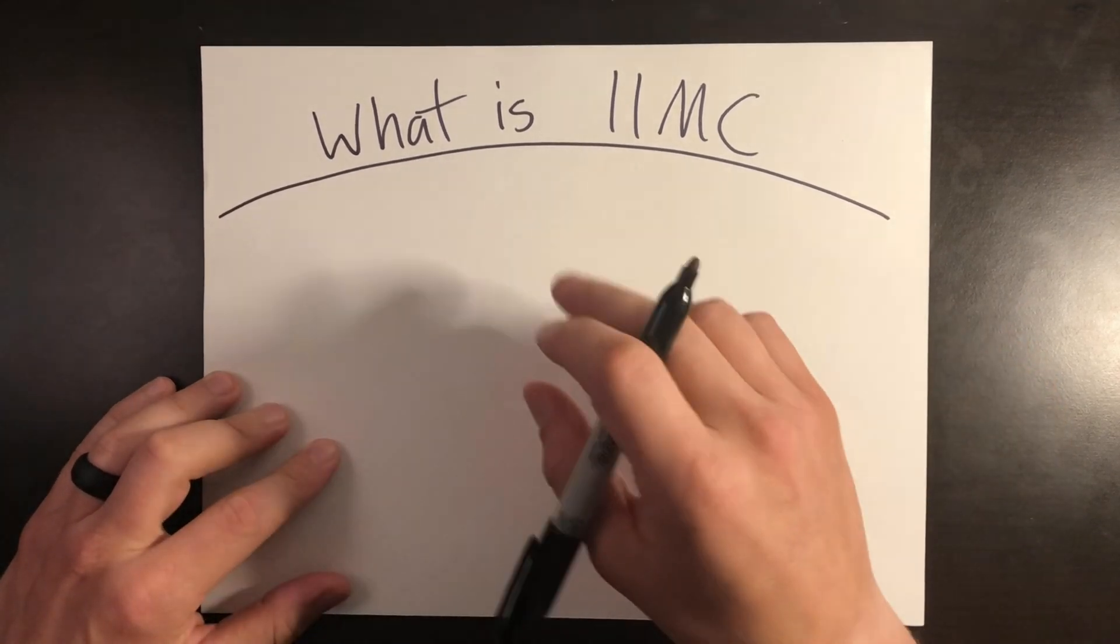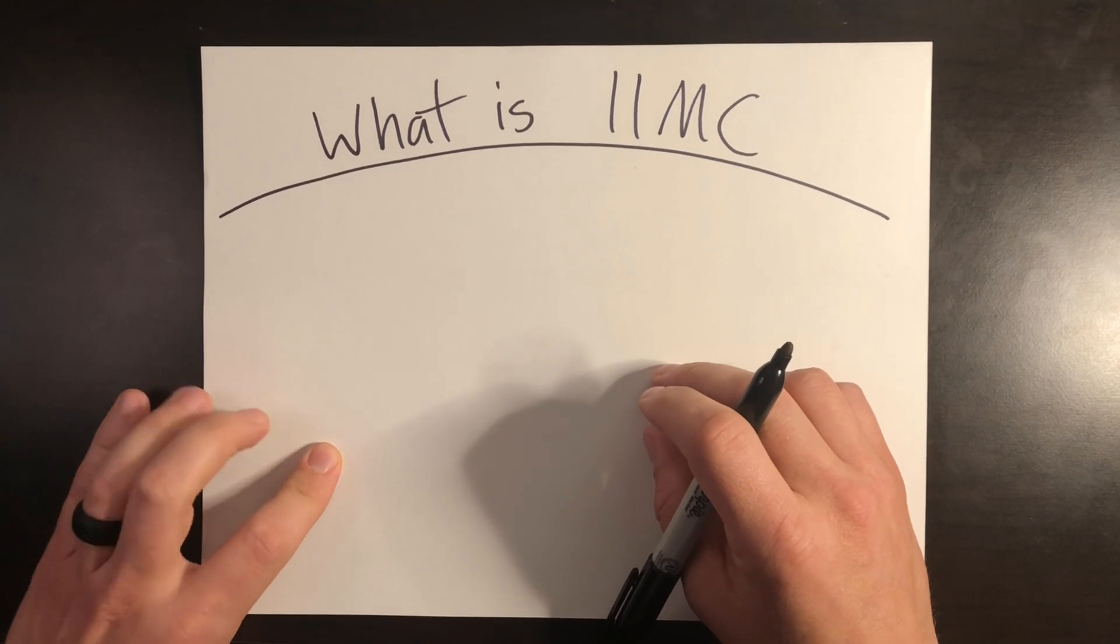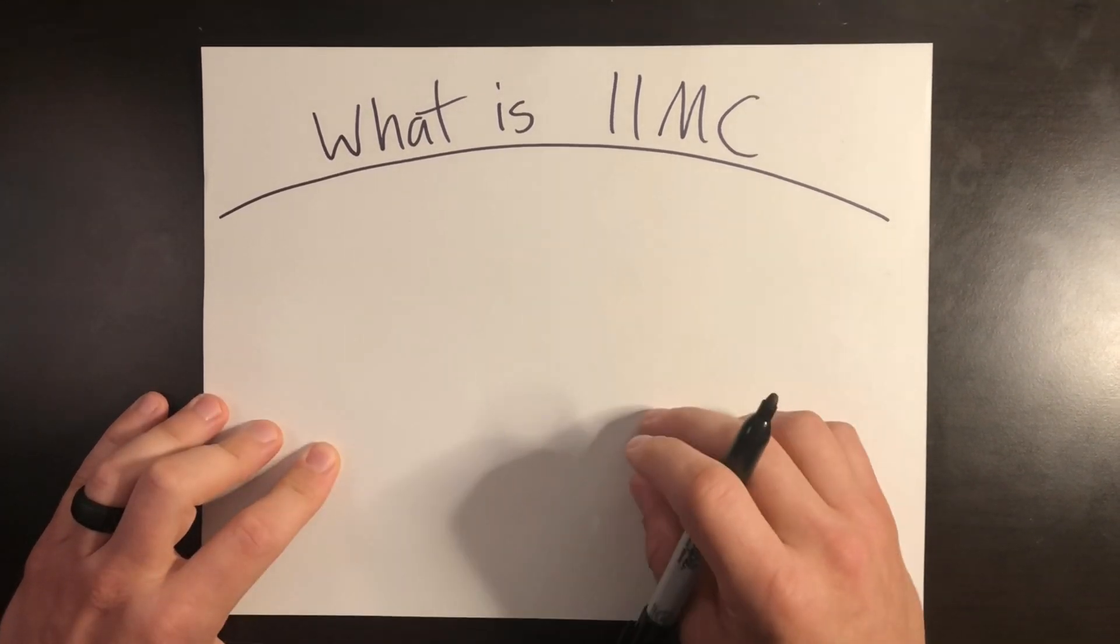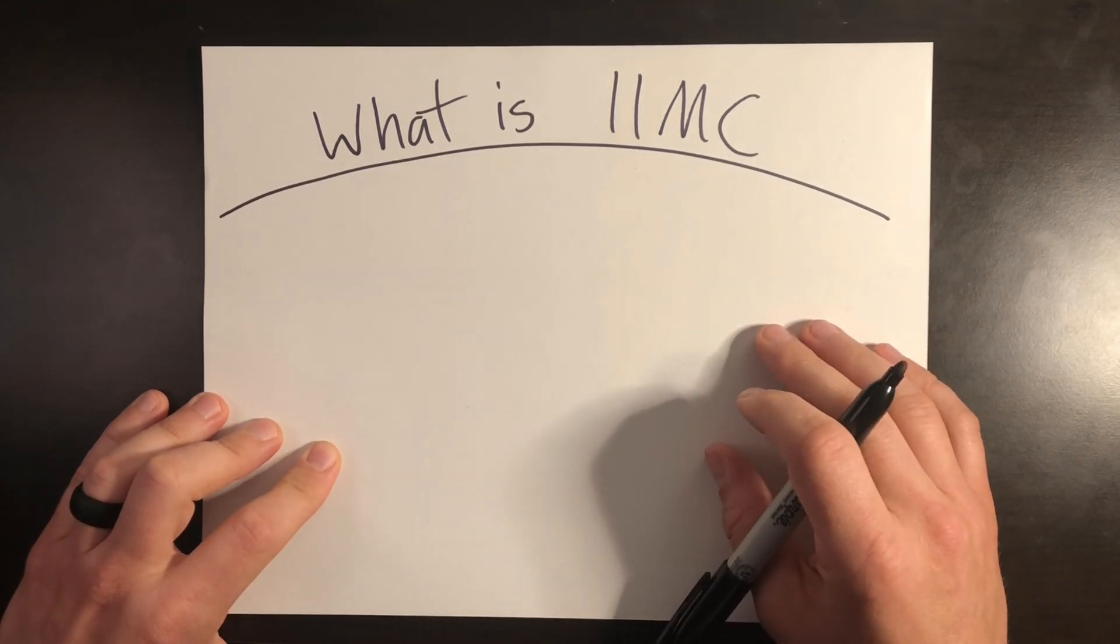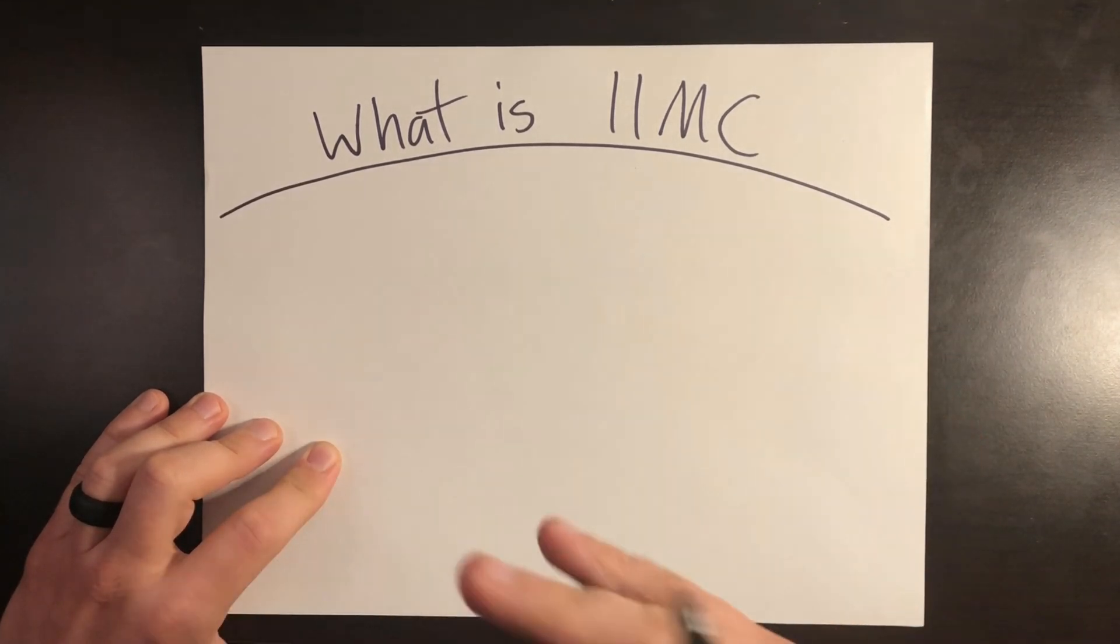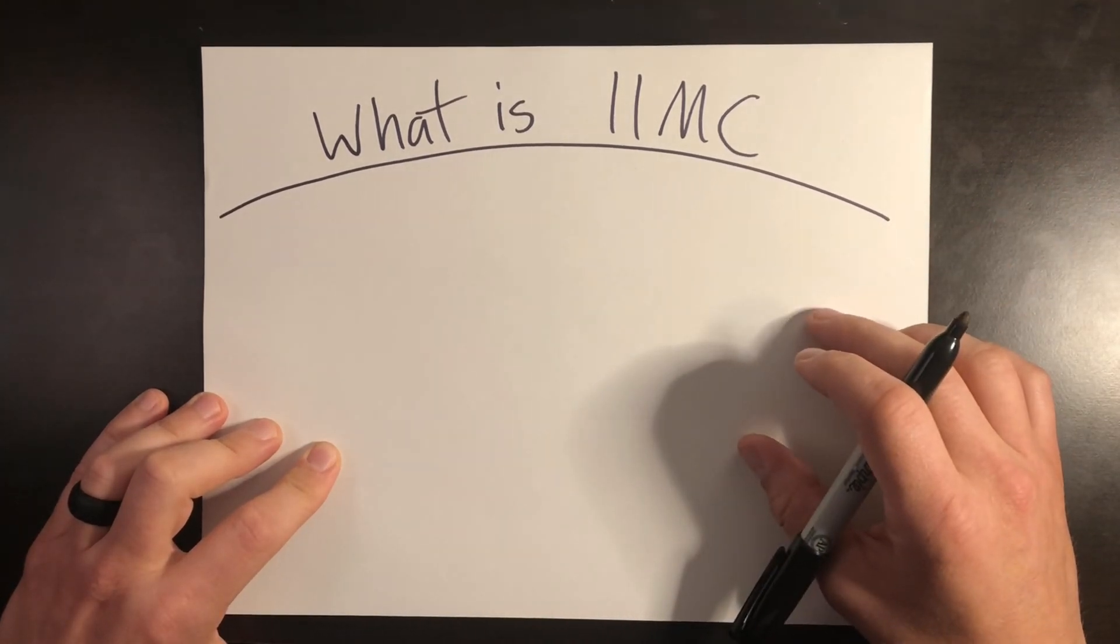But let's break down what is IIMC in this video. Now weather varies day by day, hour by hour, in all parts of the world. In aviation, this affects visibility and generally the weather that you're flying in.